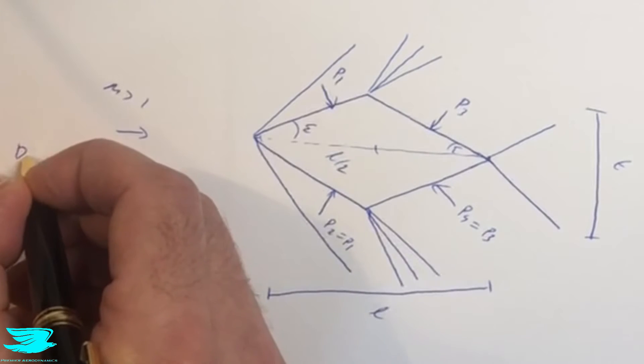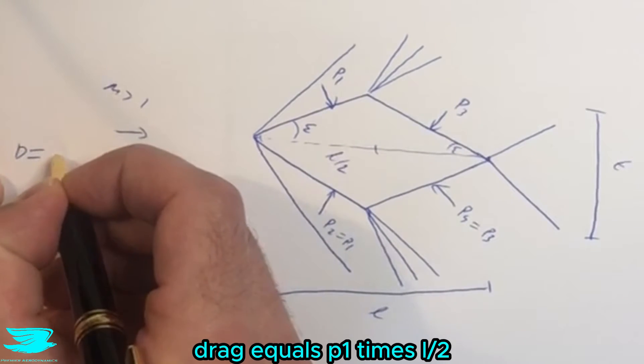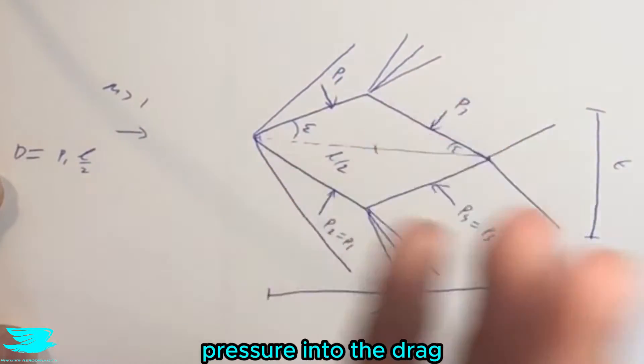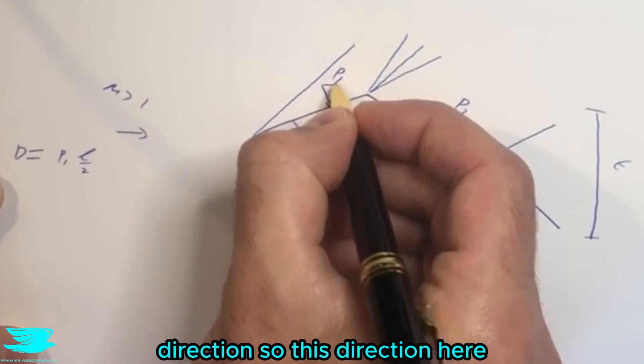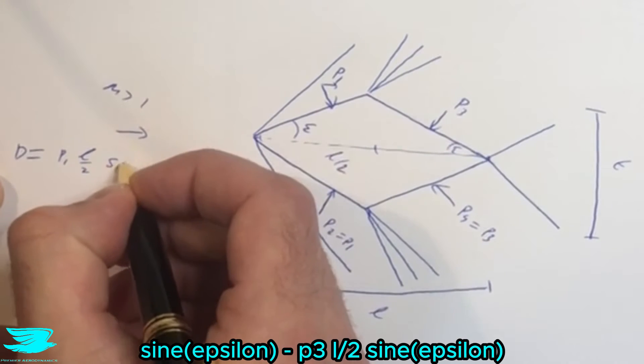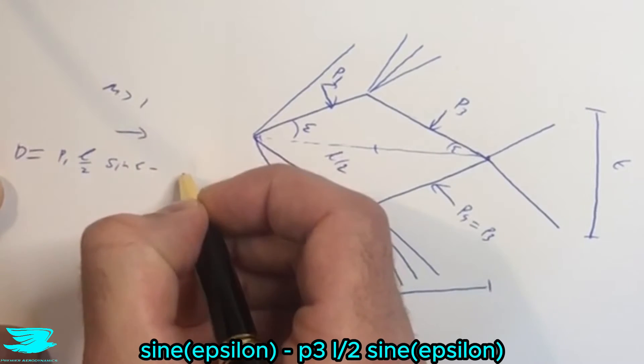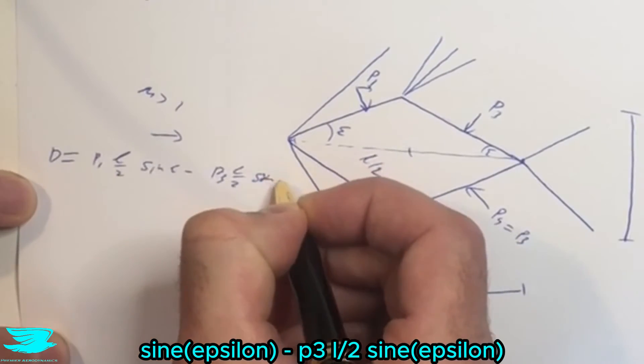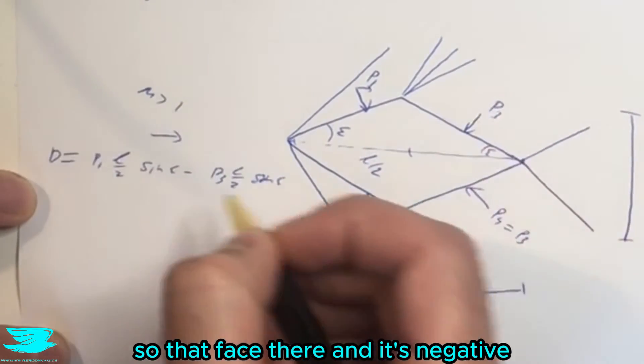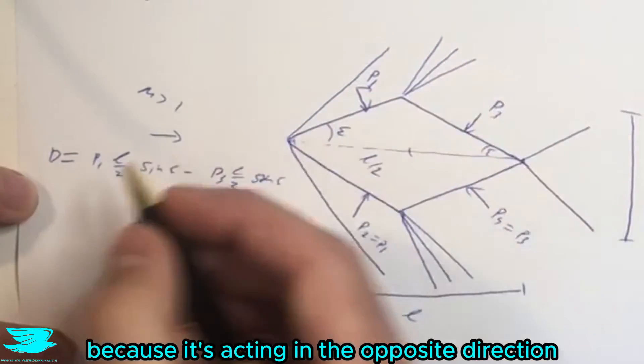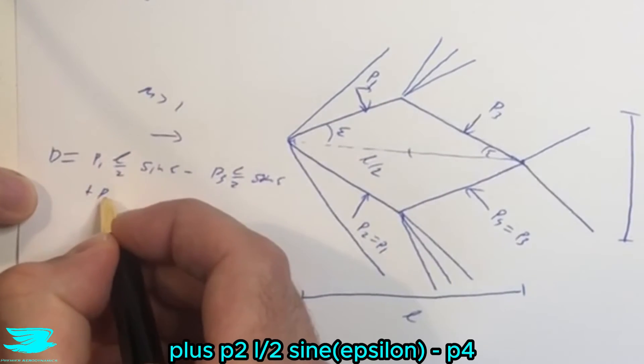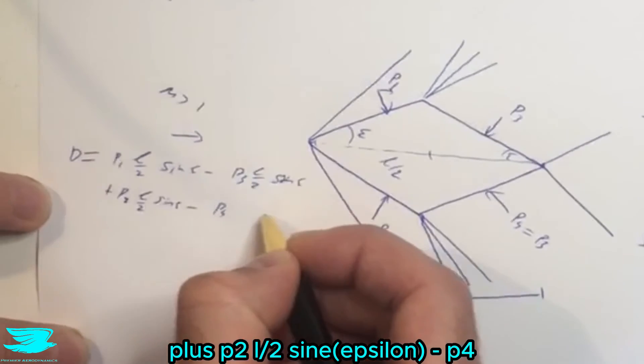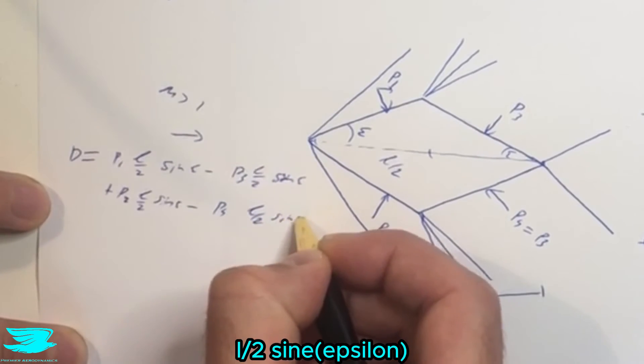So in terms of drag, drag equals P1 times L on 2. So this face, we're decomposing this pressure into the drag direction. So this direction here, sine epsilon minus P3 L on 2 sine epsilon. So that face there, and it's negative because it's acting in the opposite direction, plus P2 L on 2 sine epsilon, minus P4 L on 2 sine epsilon.